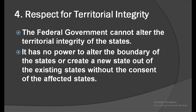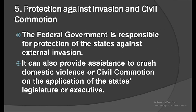The federal government cannot simply redraw the boundaries of the states. Protection against invasion and civil commotion: the federal government is responsible for the protection of states against external invasion. In case the territorial integrity of the states is threatened, it is the responsibility of the federal government to protect the states against such threats. It can also provide assistance to address domestic violence or civil commotion if the states concerned seek help from the center. But there are also situations where the federal government can interfere without the permission of the state, such as when federal laws are being violated or national properties are being destroyed or endangered — in such cases the federal government can even send its troops.